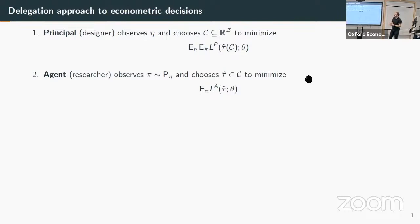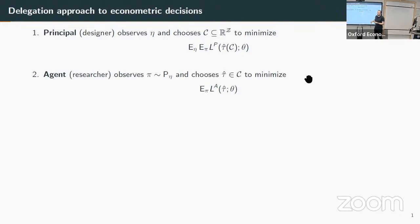The basic model I used is mechanism design. There are results in mechanism design we can use to model these settings as an interaction between the researcher—the agent—and a principal who is the designer, who may put constraints on that estimation. For example, the editor of a journal. The agent has some loss function and may have private information captured by having an informative prior, while the principal has some belief about that information but doesn't know it and wants to delegate the decision.